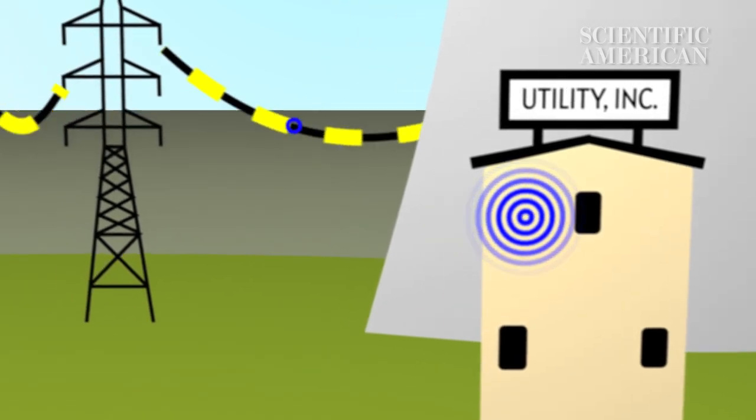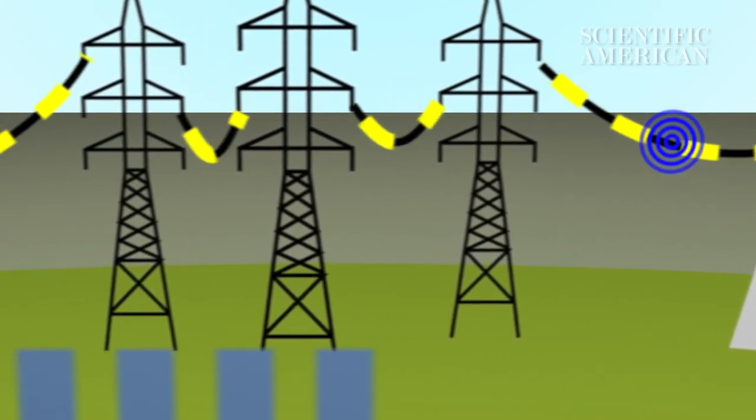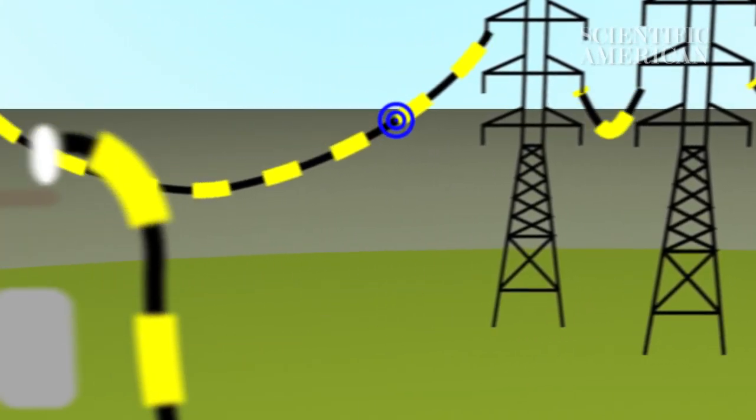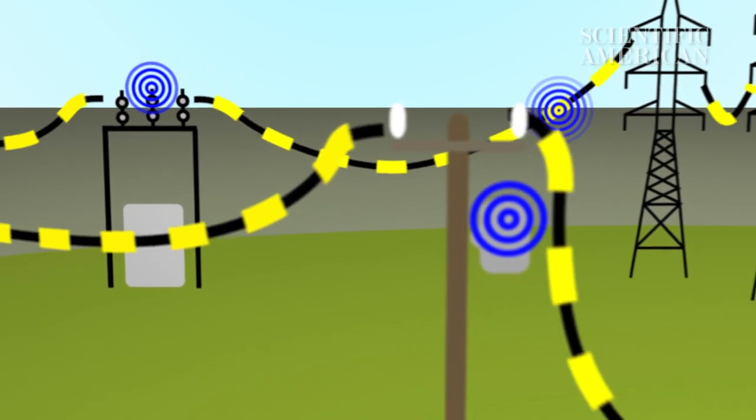As sensors become cheaper and cheaper, and technologies like the internet and wireless communication become widespread, utilities are adding more and more sophisticated sensors to the grid. And this means one thing — more information.